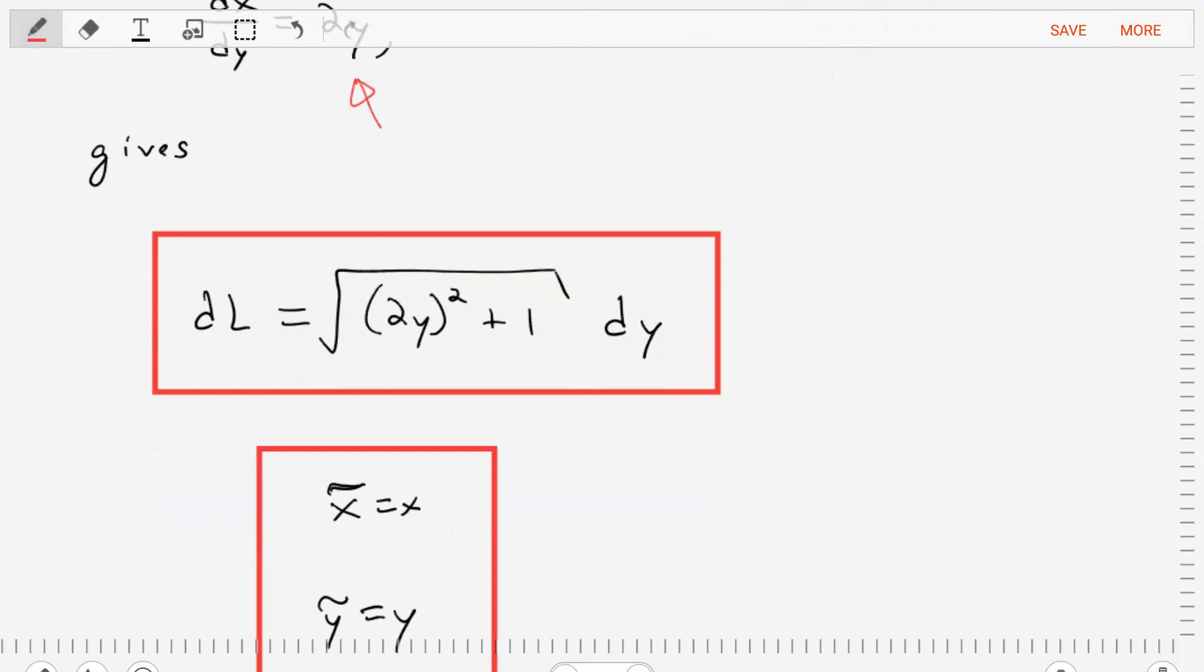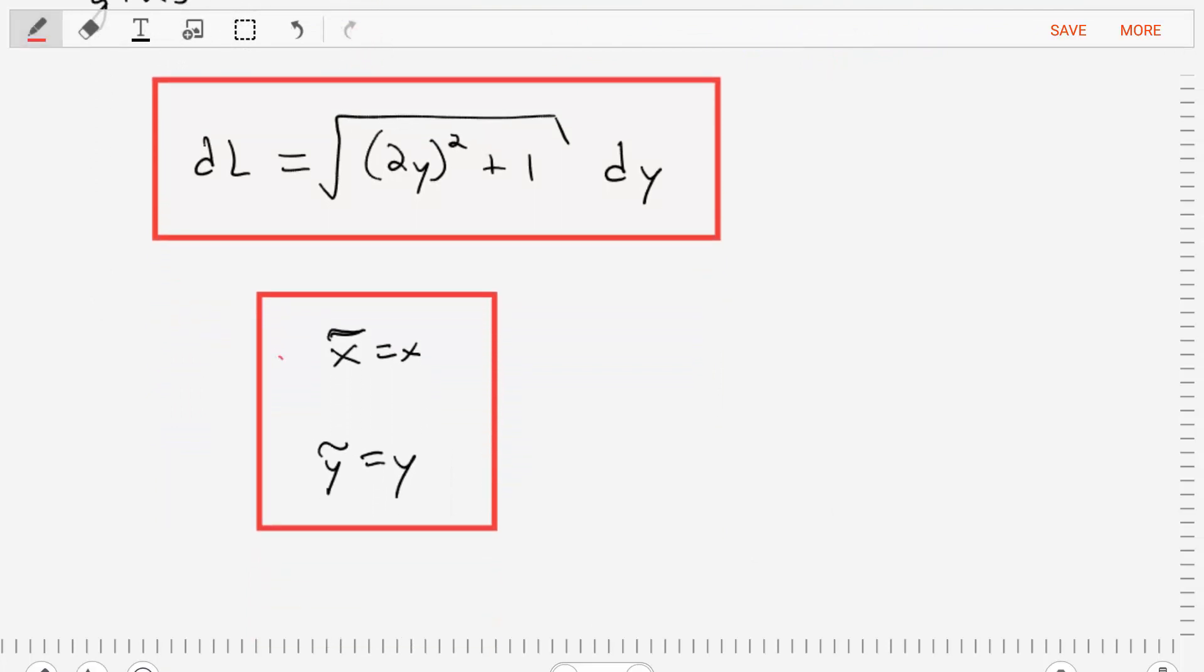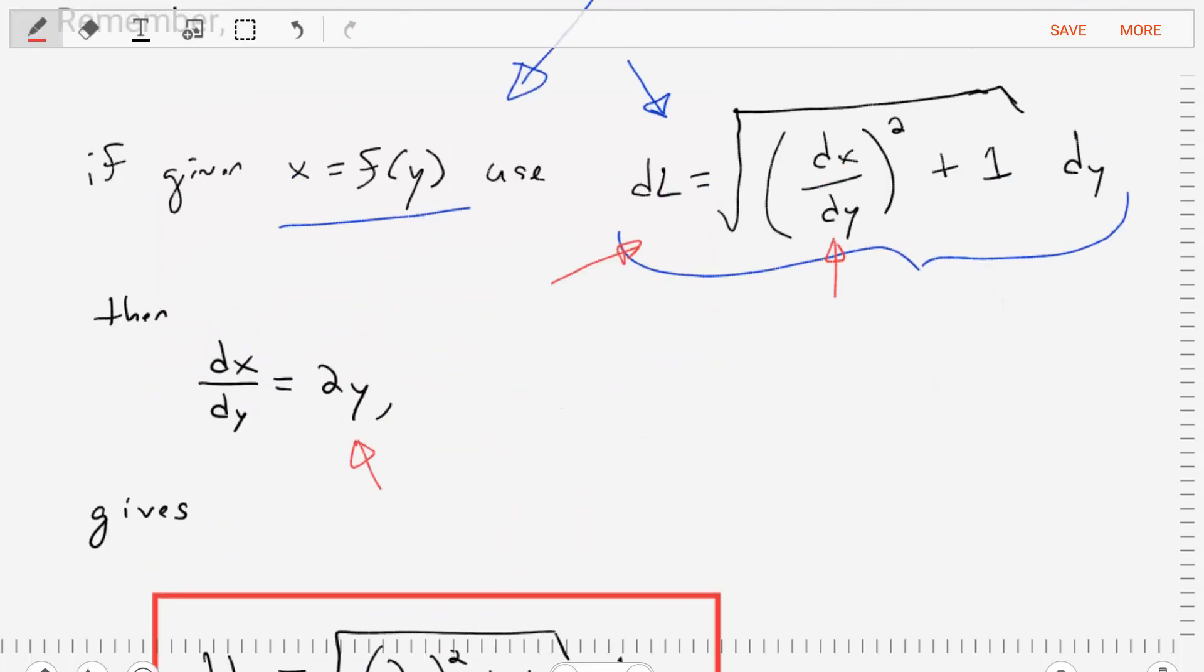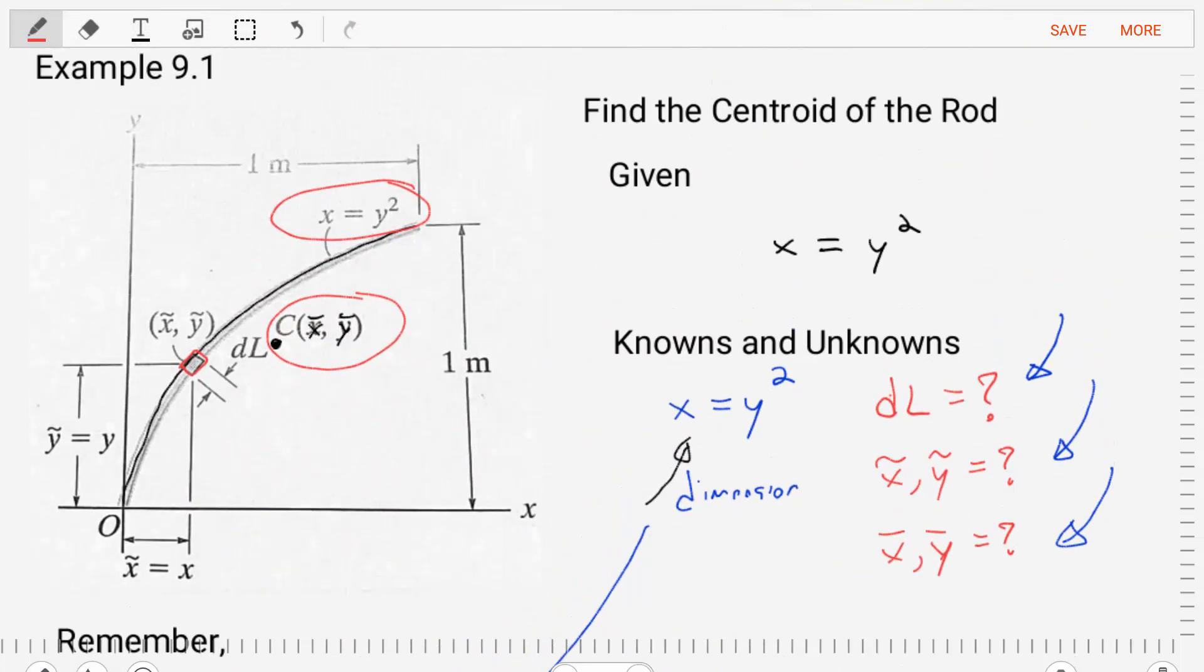The next step is to find expressions for x-tilde and y-tilde. For this one, it's very easy. We go up to our diagram, we see the element that we selected. And we want to set x-tilde and y-tilde as a distance from 0,0 to the x center and 0,0 to the y center of our differential element. So we'll just set those as equal to x and y as variables, and we're good.